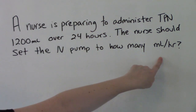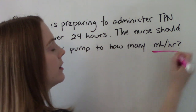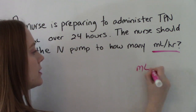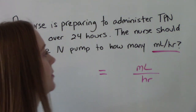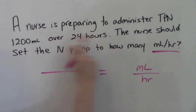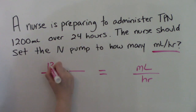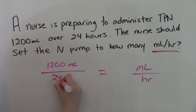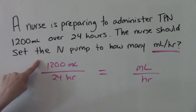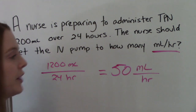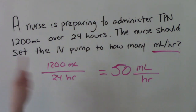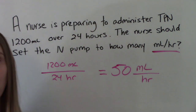What are we looking for? mLs per hour, right? So we're going to put mLs per hour in our answer. What does the problem tell us? We have 1200 mLs in 24 hours. For this type of problem, you're just going to divide it down. So 1200 divided by 24 equals 50. So what should the nurse set the pump for? 50 mLs per hour.